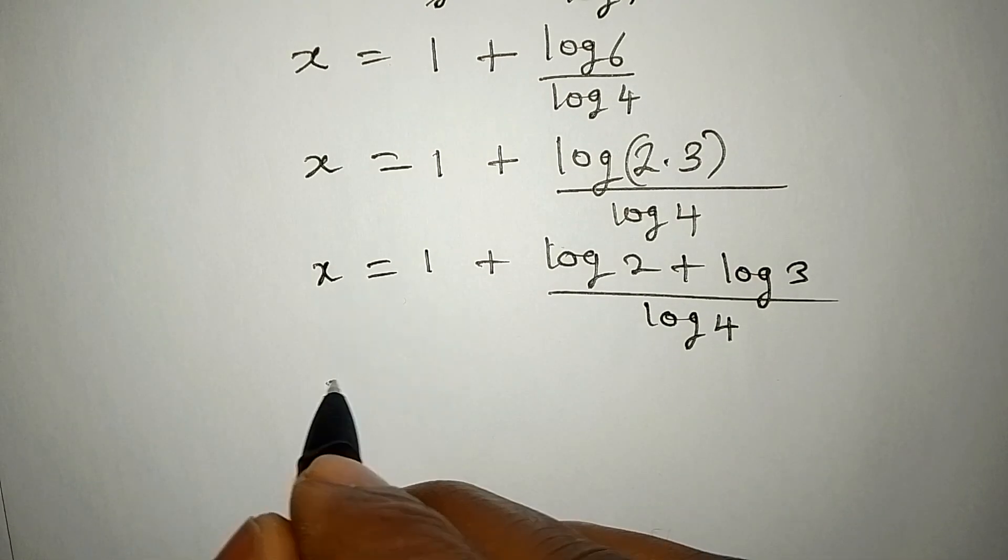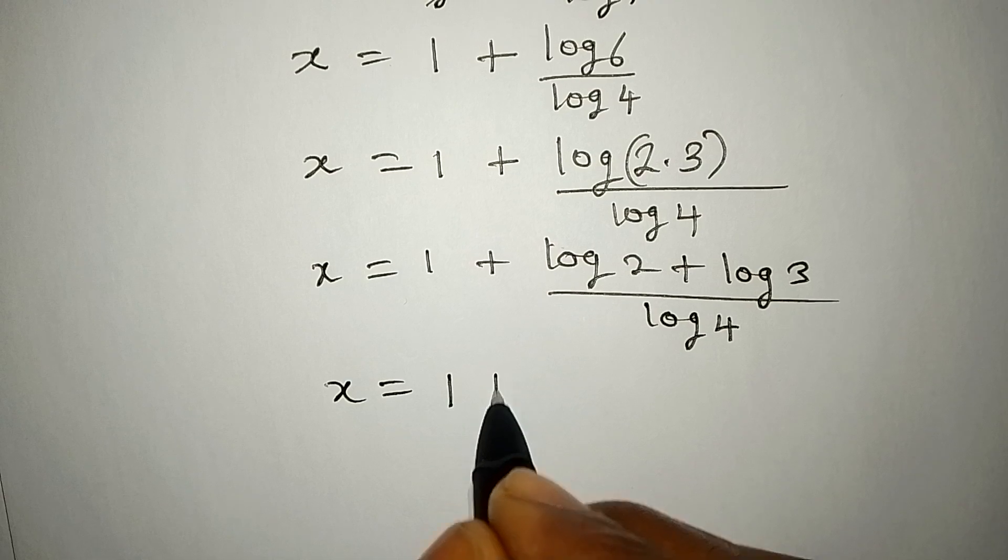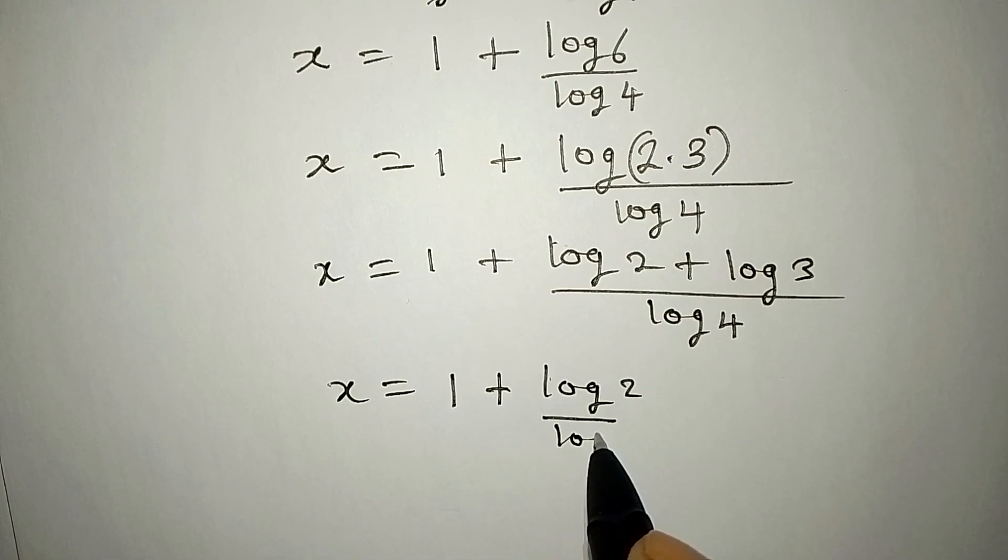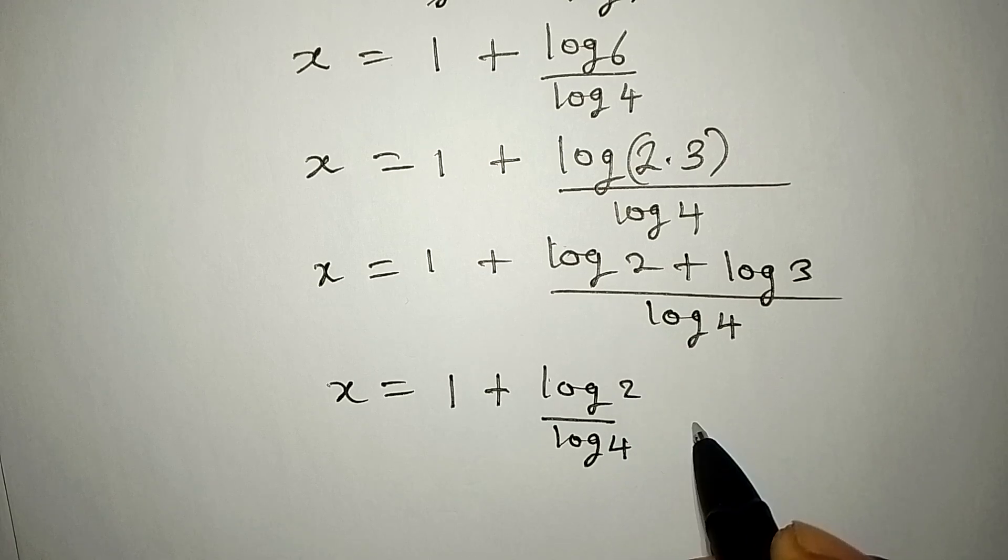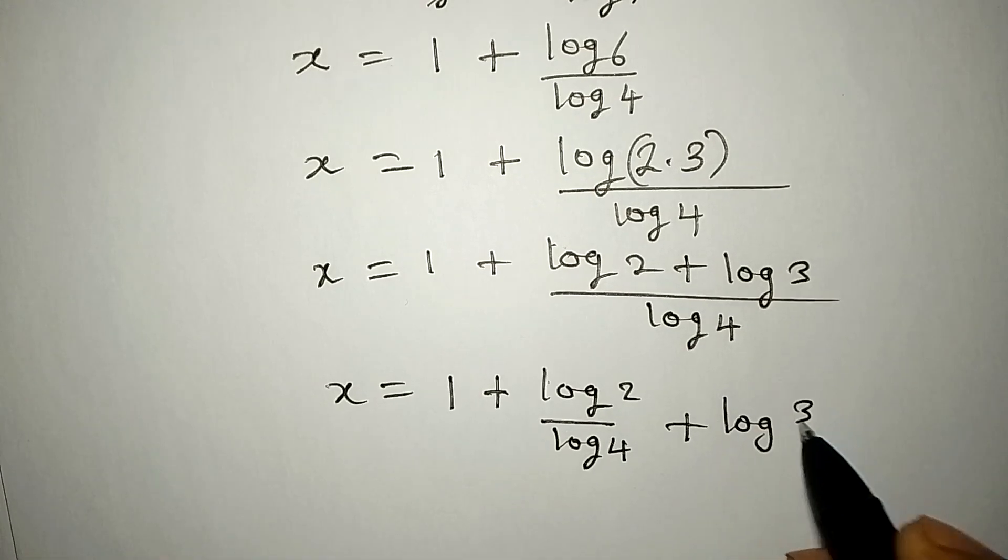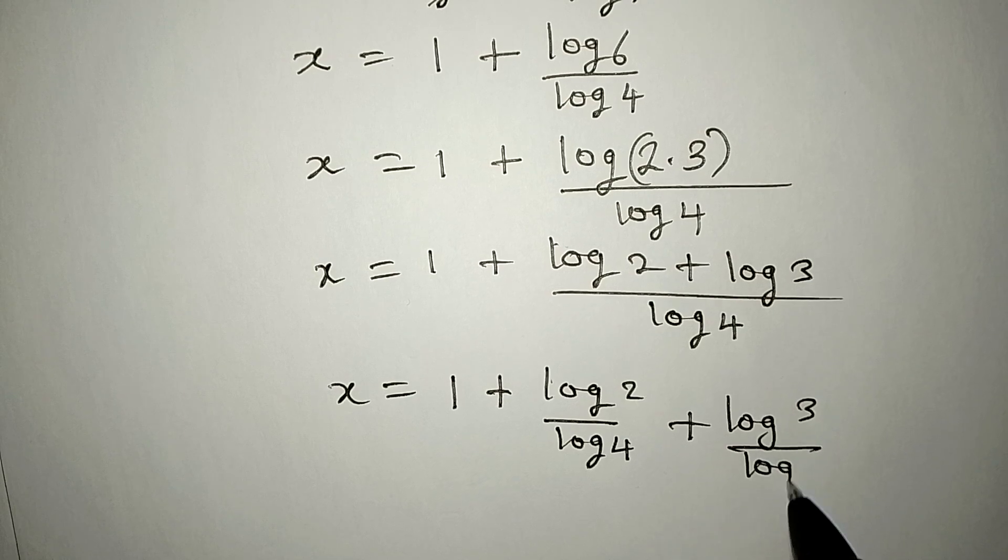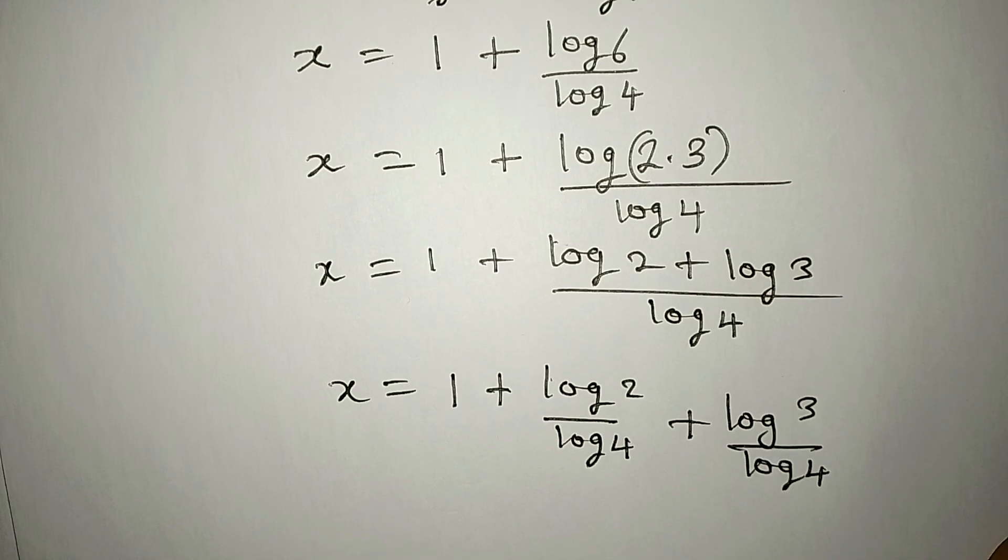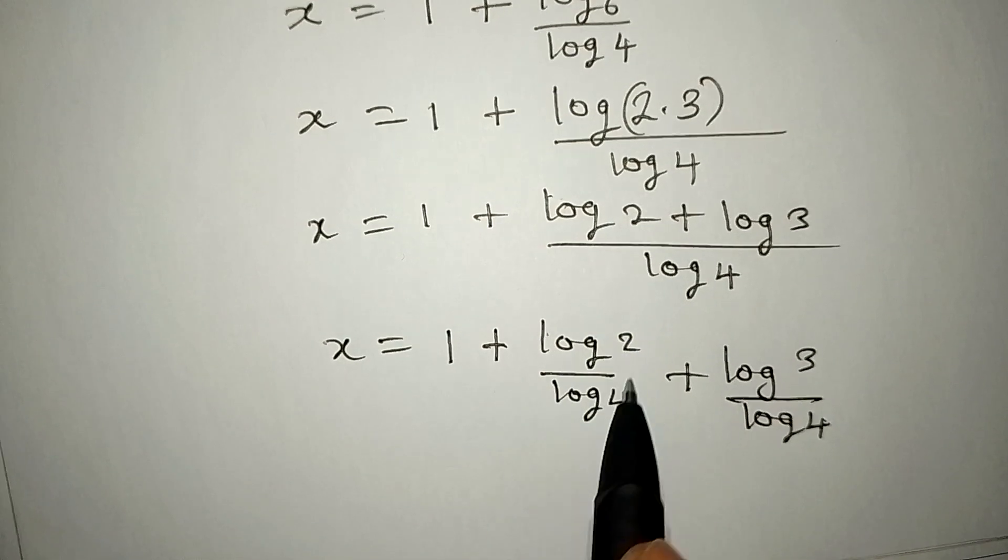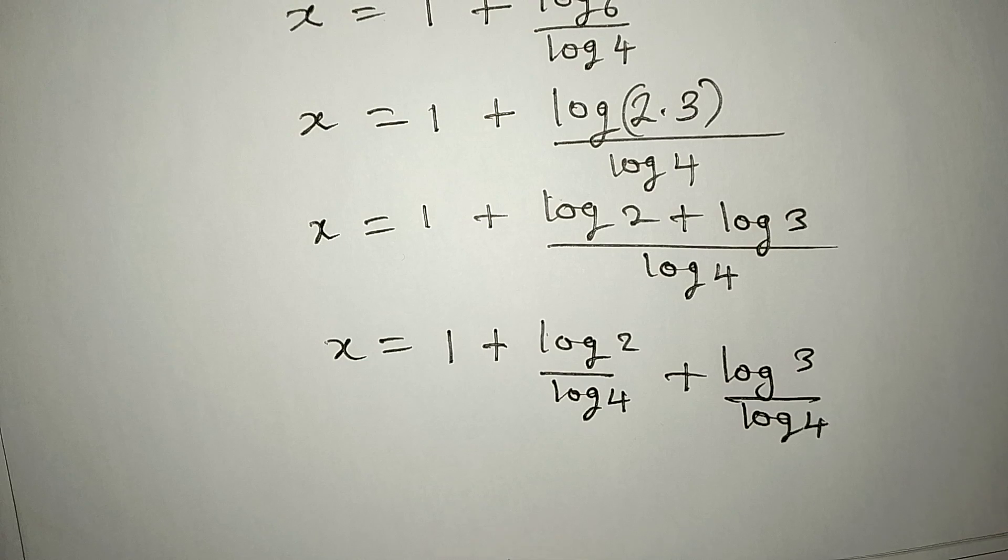To continue, x will be equal to 1 plus log 2 over log 4 plus log 3 over log 4. And from here, we can still simplify what we have here. We can simplify this.